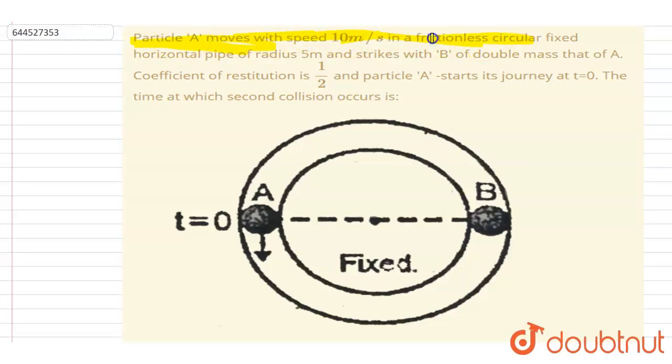speed 5 meters per second in a frictionless circular fixed horizontal pipe of radius 5 meters and strikes B of double mass. The coefficient of restitution is half. Particle A starts its journey at t=0. The time at which the second collision will occur...